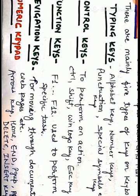The next type is navigation keys. Navigation keys are used for moving through documents or web pages, and sometimes they are also used for editing text. These keys include arrow keys, Home, End, Page Up, Page Down, Delete, Insert, and so on. The next category is numeric keypad. The numeric keypad contains number keys from 0 to 9 as well as arithmetic operators, decimal points, etc. It is placed on the right side of a keyboard and is used for entering numbers at a faster speed.